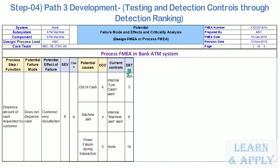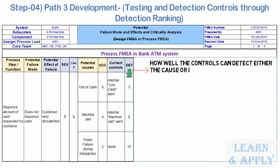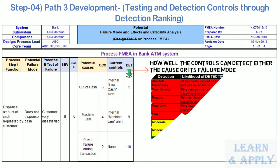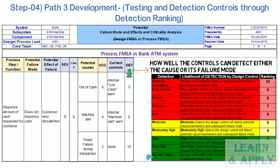For detection ranking, determine for each control how well it can detect either the cause or its failure mode after they have happened but before the customer is affected. Detection is rated on a scale of 1 to 10, where 1 means the control is absolutely certain to detect the problem, and 10 means the control is certain not to detect the problem or no control exists. In the ATM example, we score 5, 9, and 10 respectively for the current controls in Path 3.